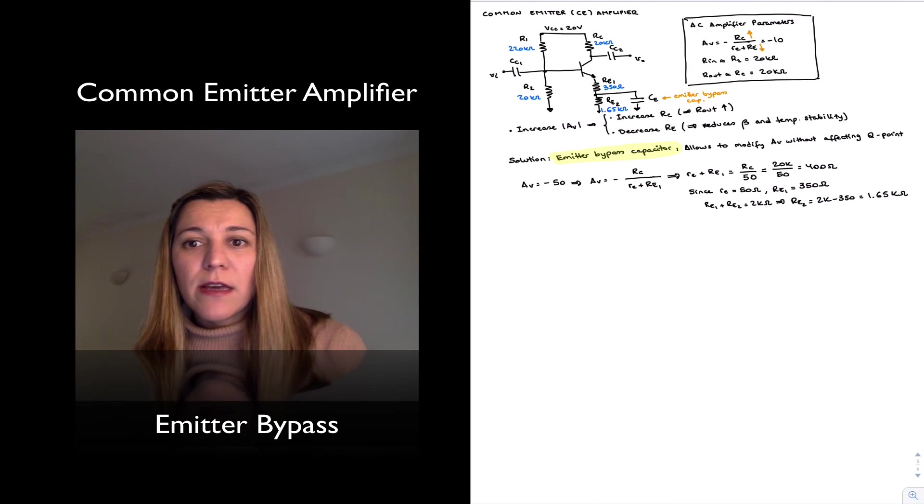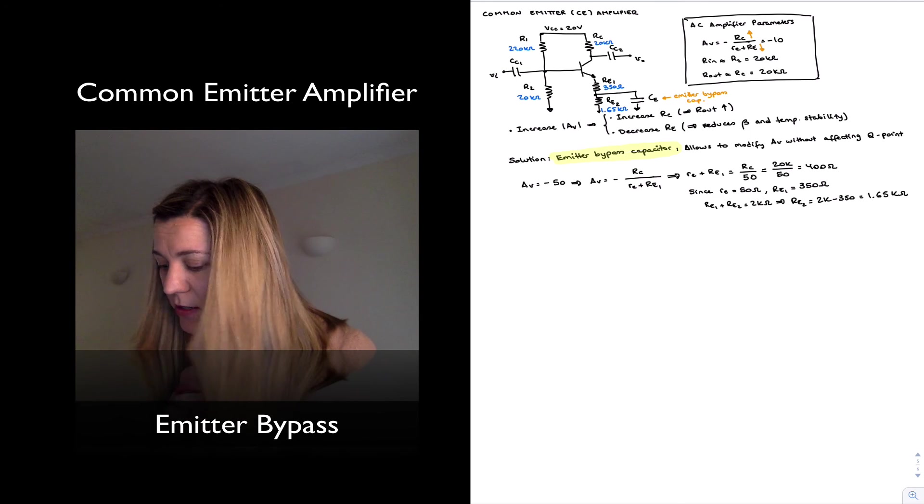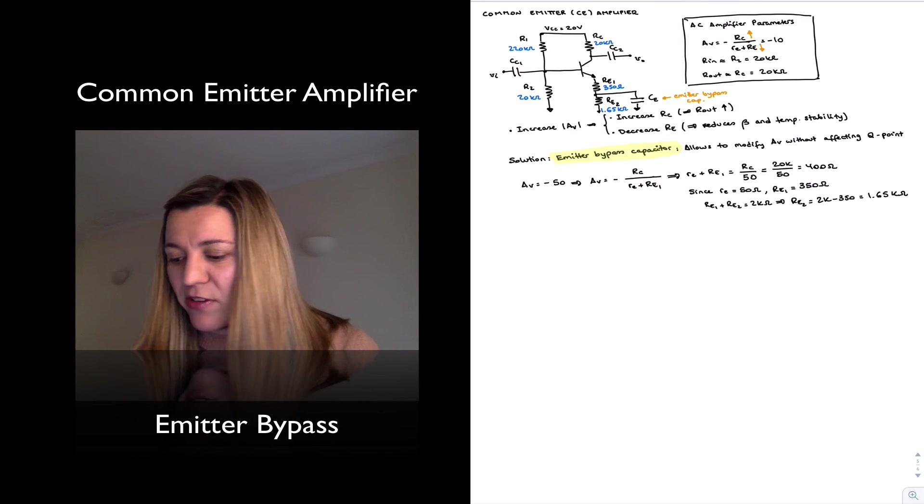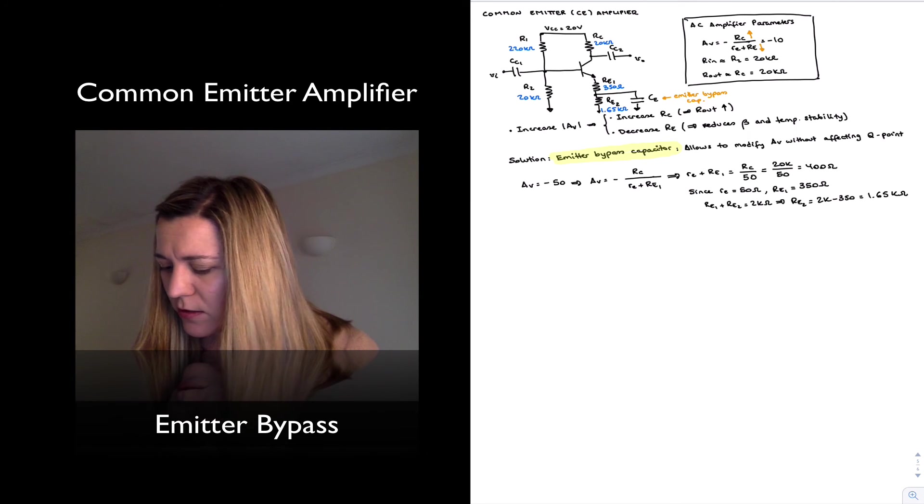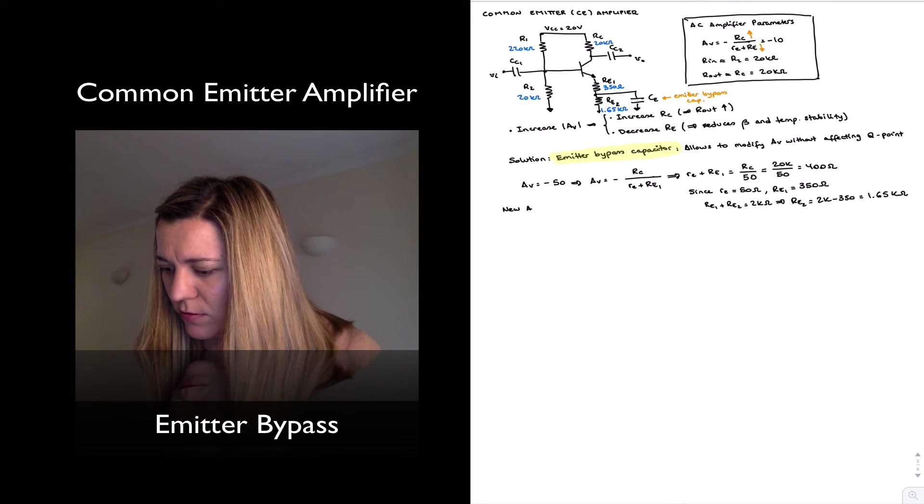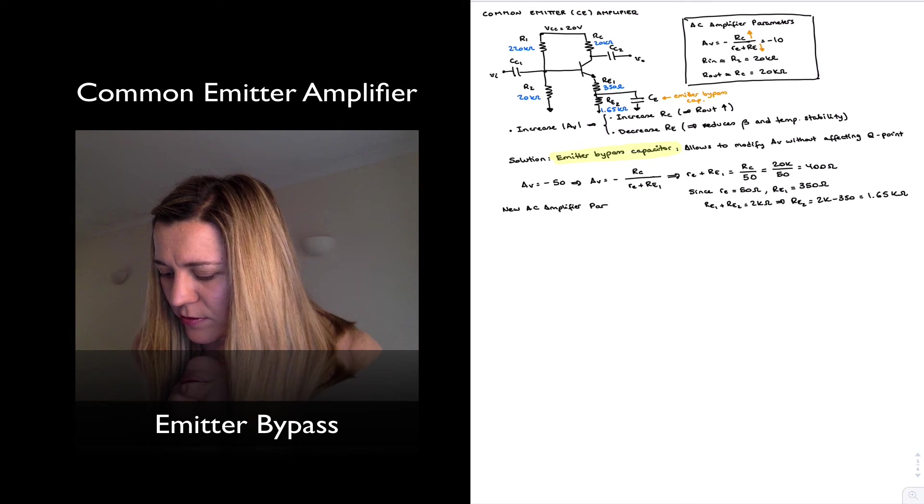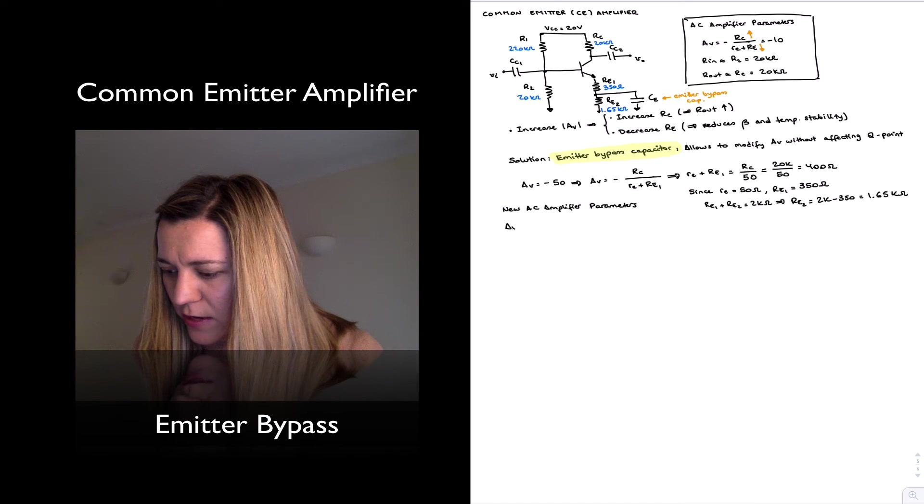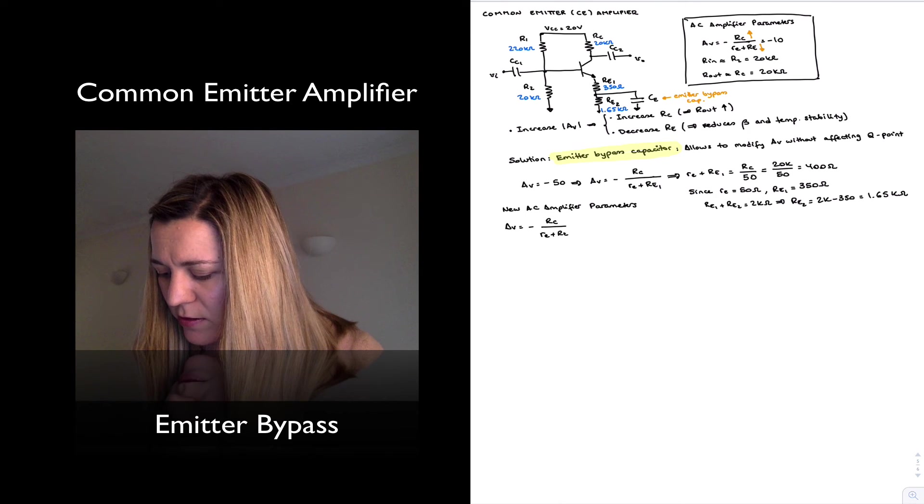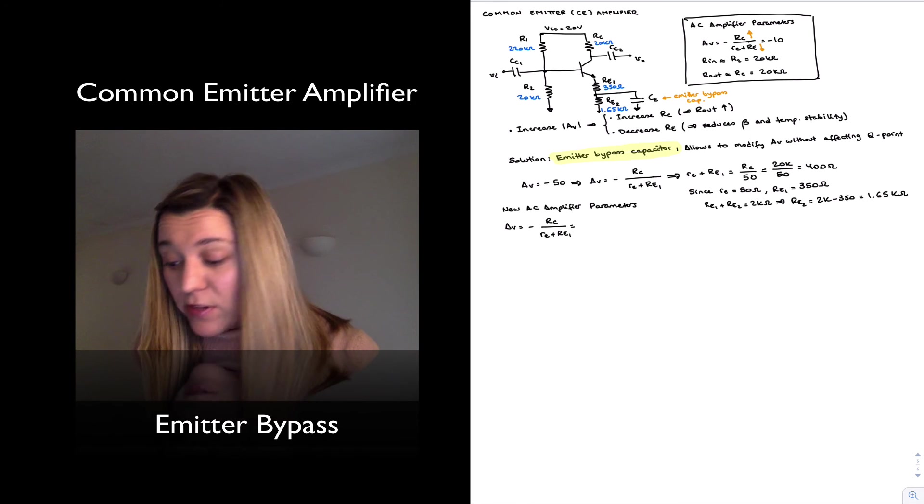Let's look at how the parameters have changed for the circuit, the new AC amplifier parameters. So I'll write them here, new AC amplifier parameters. We have our new gain, gain equal to negative RC divided by little RE plus RE1, which is equal to negative 50.